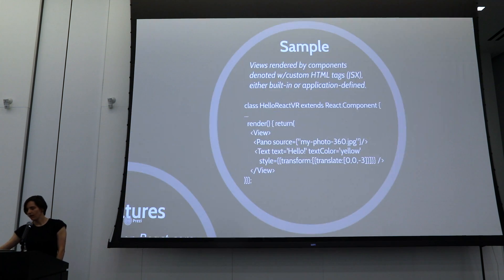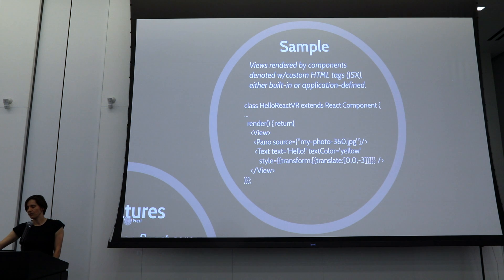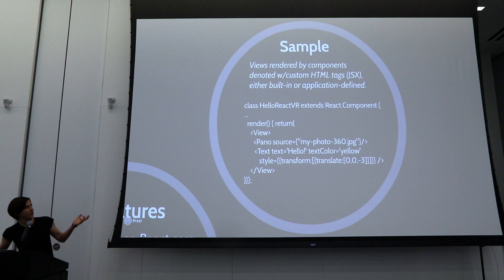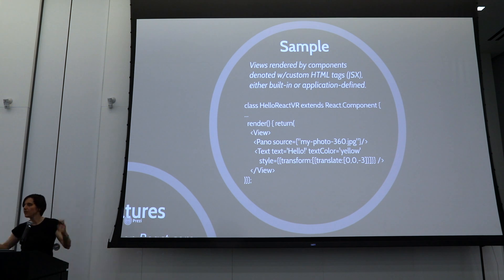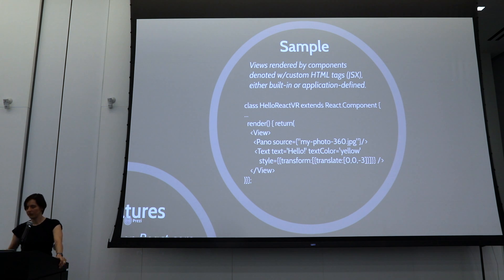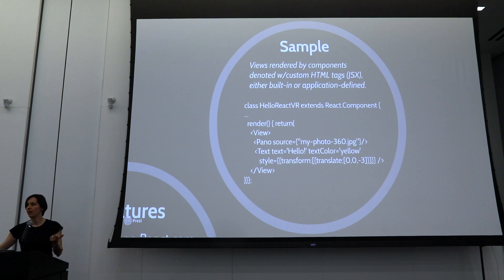Here's a little code example. In React VR, views are rendered by components designated by custom HTML tags called JSX. There are some built-in ones, and you can also define your own. In this hello world snippet, you see tags like view, pano, and text. A pano is a VR-specific tag that refers to a 360 image you want in your scene, where you specify the source. The text floats in space, and instead of just X and Y like in React Native or React JS, here in React VR we have X, Y, and Z for that third dimension. We're setting Z at negative three, so the text is away from the camera so you can see it.